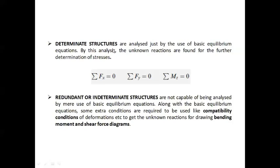A determinate structure is one that can be easily analyzed using only the basic equilibrium conditions. An indeterminate structure is one that cannot be analyzed using equilibrium conditions alone — some extra compatibility conditions are required for proper analysis. If a structure can be analyzed using basic equilibrium conditions — three for a plane frame, six for a 3D frame — it is called a determinate structure; otherwise it is termed indeterminate.